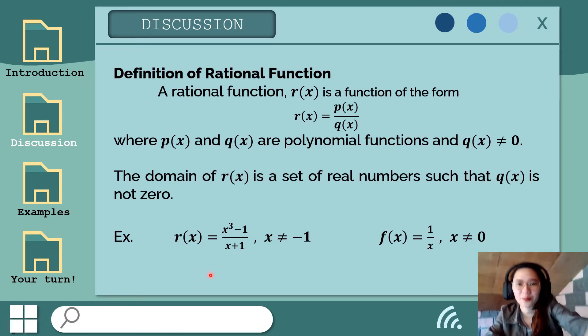Tingnan po natin itong mga examples na ito. We have here r of x is equal to x cubed minus one over x plus one wherein yung ating x must not equal to negative one. Sabi nga natin kanina ang q of x must not equal to zero. At kapag yung x natin ay naging negative one, magiging zero yung q of x natin kasi negative one plus one is zero. So hindi po kasama ang negative one sa domain ng ating function. Next naman po is one over x na kung saan ang x natin must not equal to zero. Kasi nga, again, ang q of x is not equal to zero. So yan yung mga example, sample example ng ating rational function. Mag-explore pa tayo ng mga situation that can be modeled using rational function.